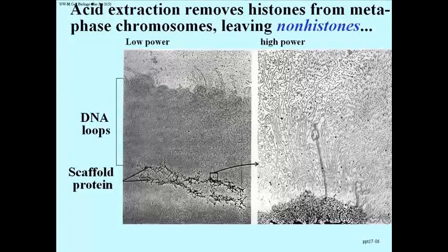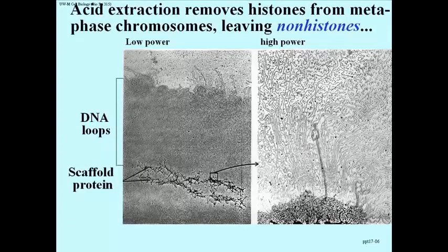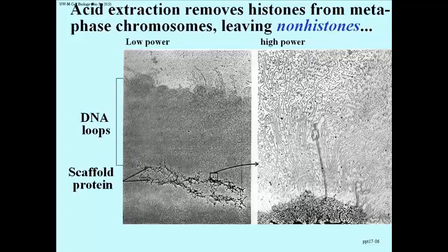What's really interesting is that the proteins in the scaffold in this extract of chromatin are of course non-histones, but they are largely one kind of non-histone. There are other proteins in here too.